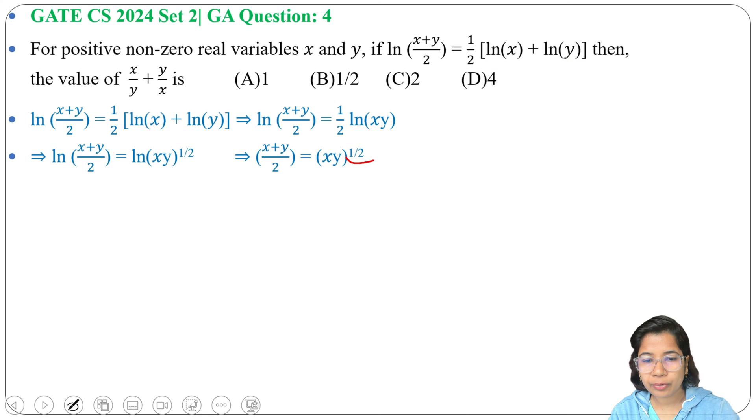To remove this half power, we square both sides. After squaring, we get [(x+y)/2]^2 = xy.